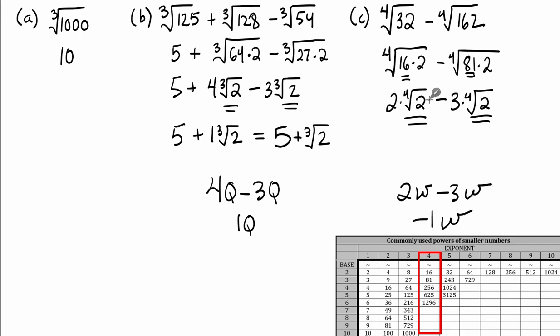So up here, using the same exact idea, 2 fourth root of 2 minus 3 fourth root of 2 is negative 1 fourth root of 2. But most people don't write it that way. They just write it as negative fourth root 2 without writing the 1 in front.